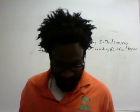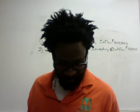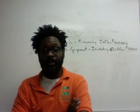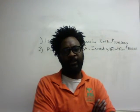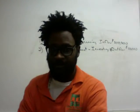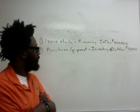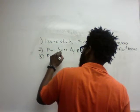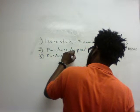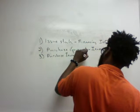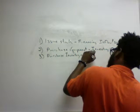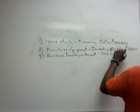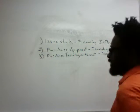Transaction three: we purchased inventory on account, and the company uses the perpetual system. The journal entry is debit inventory, credit accounts payable. Is this a cash-related activity? Absolutely not, because no cash was involved. So this is a non-cash activity and does not belong on a cash flow statement.